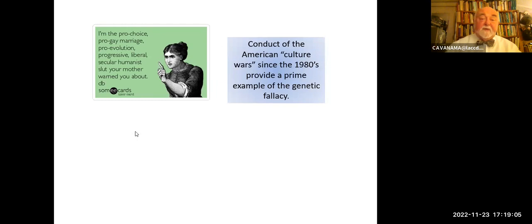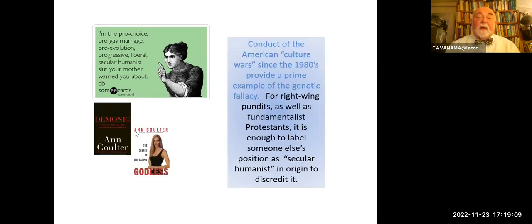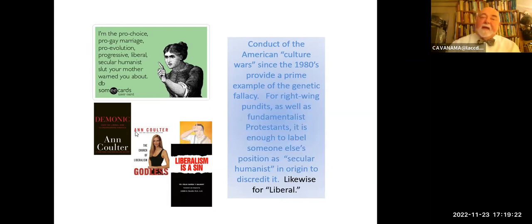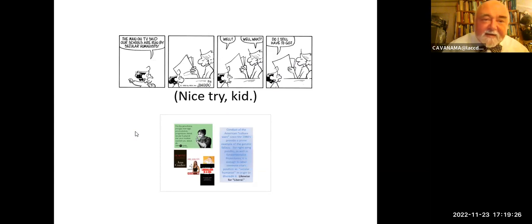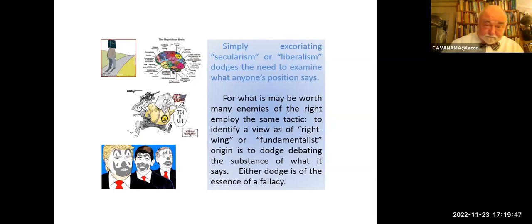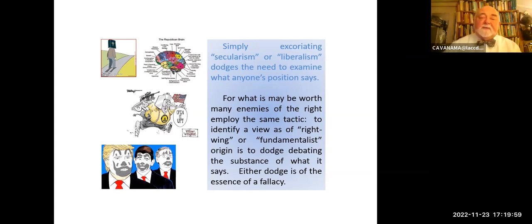Conduct of the American culture war since the 1980s provides a prime example of the genetic fallacy. For right-wing pundits as well as fundamentalist Protestants, it's enough to label someone else's politics as secular humanism in order to discredit it. Ann Coulter, for example, has made an entire career of this. Likewise for the L-word — liberal. So an enterprising kid says to his parent, 'The teachers in our schools are run by secular humanists.' 'Well, what do I still have to do?' 'Nice try, kid.' Simply excoriating secular humanism or liberalism dodges the need to examine what anyone's position actually says. For what it may be worth, many enemies of the right employ the same tactic. To identify a view as right-wing or fundamentalist — just like identifying it as secular humanist or godless — is to dodge debating the substance of what it says. Either dodge is the same. Nobody has a monopoly on this.